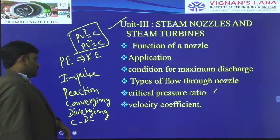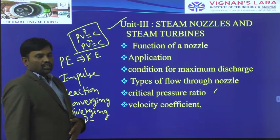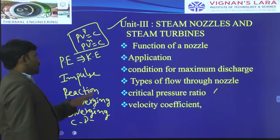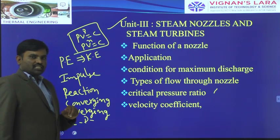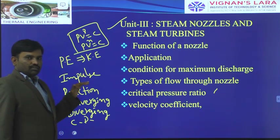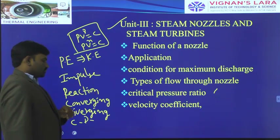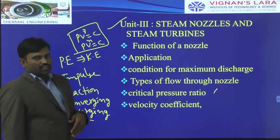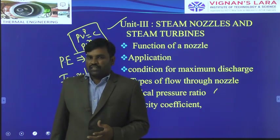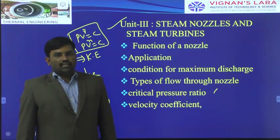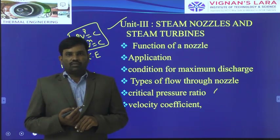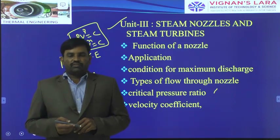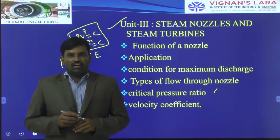At the diverging section, what is the velocity? And what is the cross-sectional area of the nozzle? In that manner we will solve some problems. We will also discuss the different types of steam turbines, the working principle of impulse and reaction turbines, and based on velocity triangles, we find the work done from the turbine.